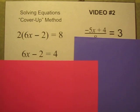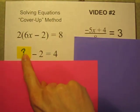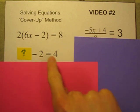Let's do it again. Let's cover up another chunk that has the variable in it. Now it turns into a simple subtraction problem. What minus two equals four? Well, clearly six minus two equals four.